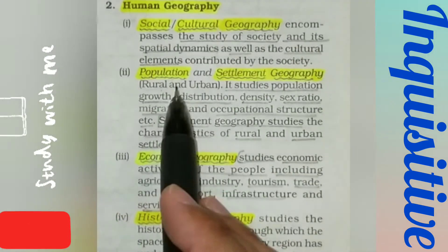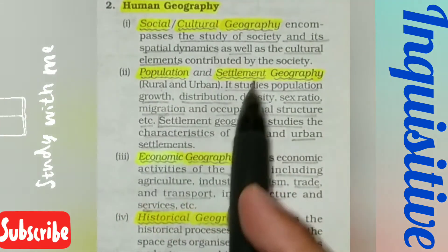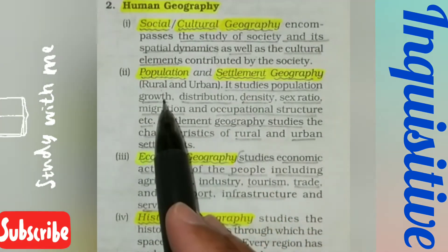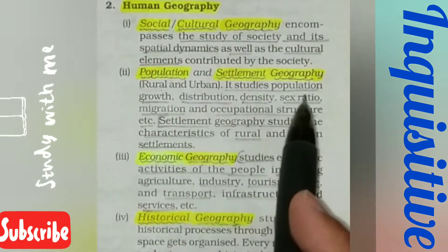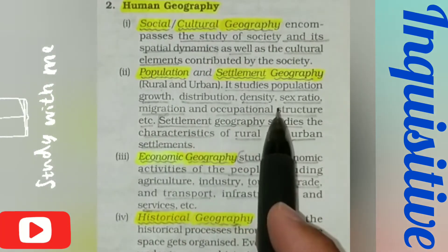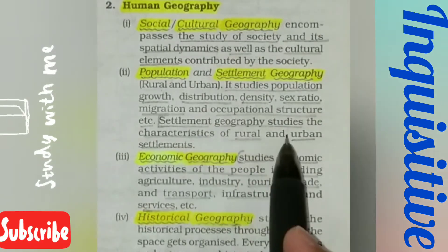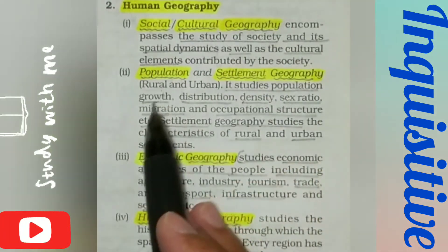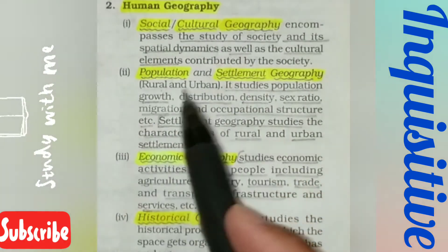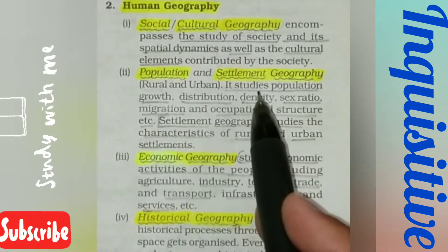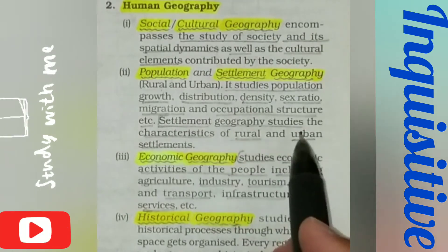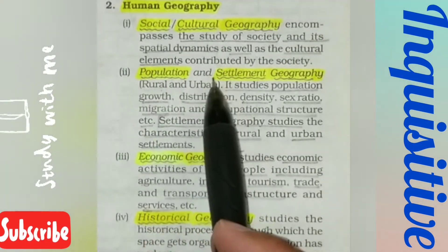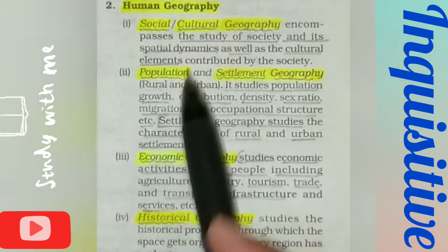The next topic is population and settlement geography. Here we study population growth, distribution, density, sex ratio, migration, and occupation structure. In settlement geography, we study rural and urban settlements more closely — how many people there are, their density, male/female ratio, literacy levels, and whether they live in rural villages or urban areas. All of this is studied in population and settlement geography.